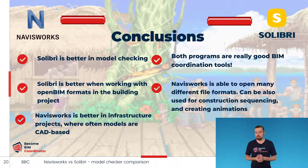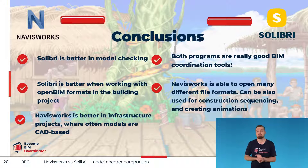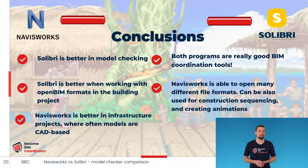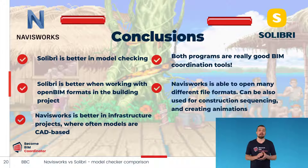How to decide which program to use depends on which features are most important to you, as well as the type of project you will be working on. If it's an infrastructure project where IFC open formats aren't used at all, it makes sense to use Navisworks. However, if it's a building project where the use of open BIM formats is required, Solibri will be the better choice. I hope that after watching this video, you will have a clearer idea of which program to use for which project.